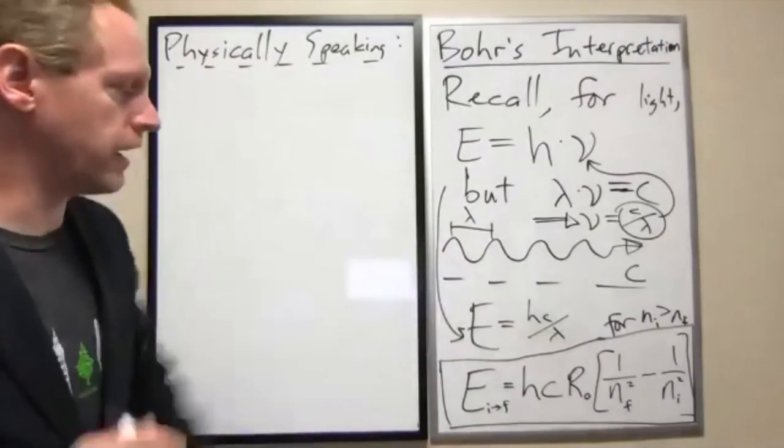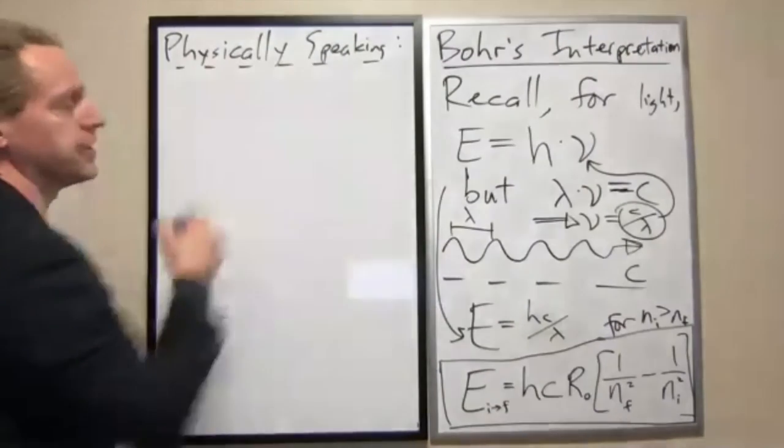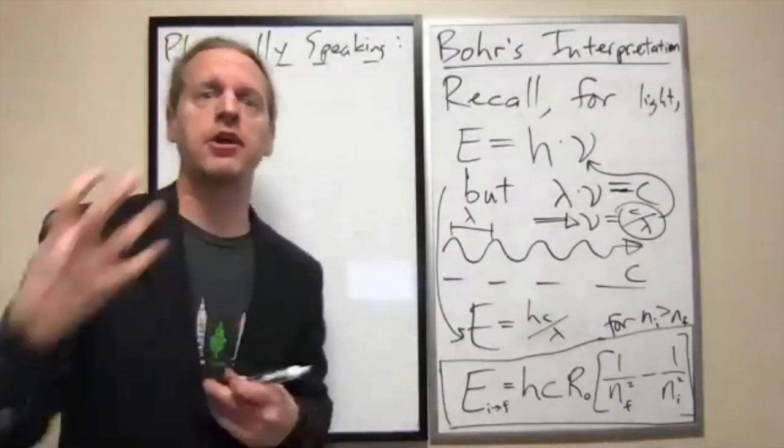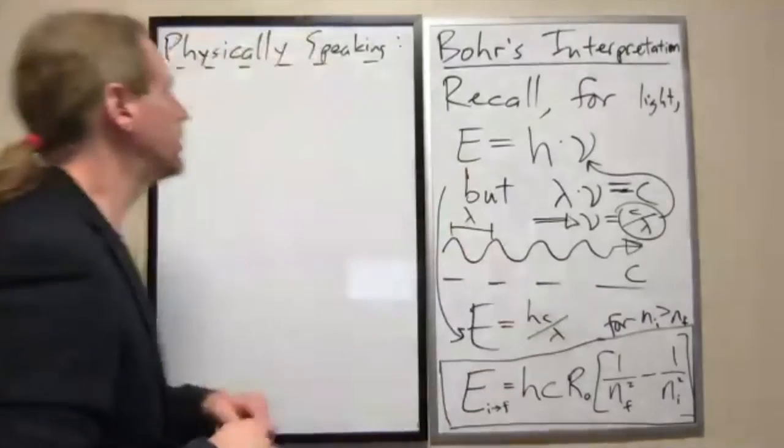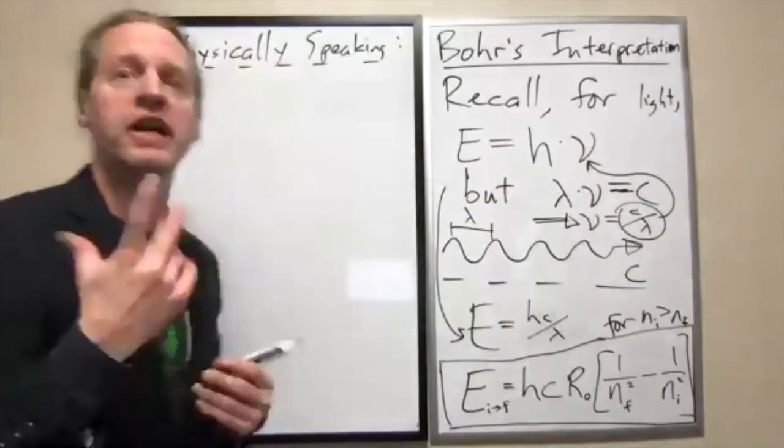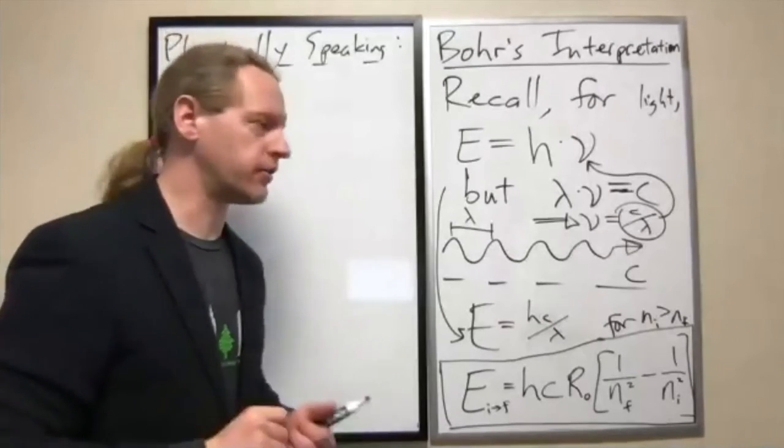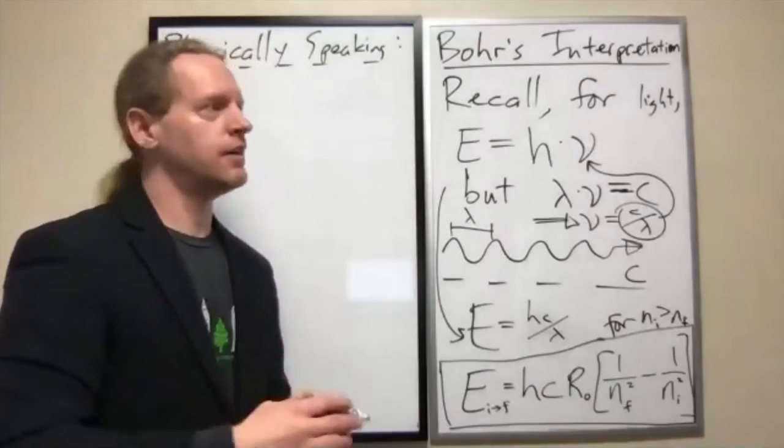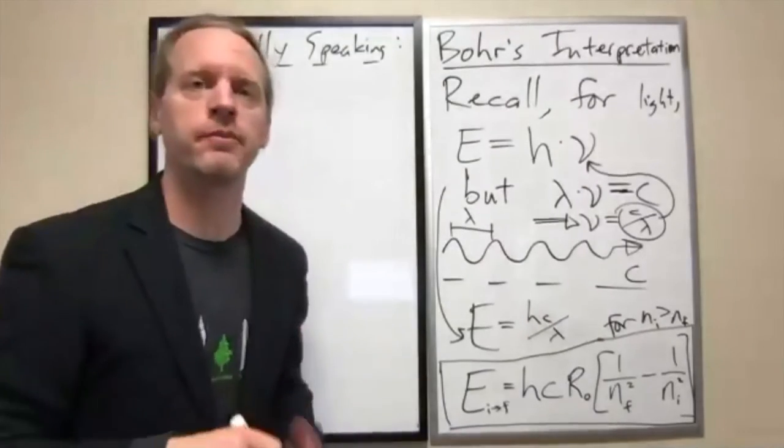To put into words what I was saying here, just to be clear, this formula was derived for the energies that could be given off by hydrogen. But what Bohr was getting at is if hydrogen is giving off these exact energies, it must be the case that these are the allowed energies of hydrogen.